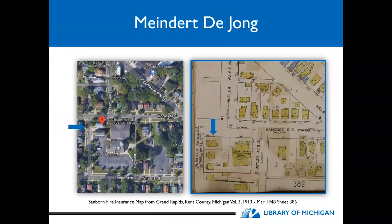Looking on an aerial map from Google Maps, we can see that the house and some of the surrounding houses are still there. Unfortunately it looks like a few of the other homes just south of 1300 Butler are now gone, but it's good to see that the house itself is still there.